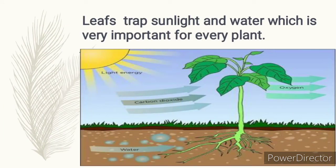Leaves trap sunlight and water, which is very important for every plant. Can you see the leaves trapping sunlight? Sunlight is very important for plants and animals. You can see in this picture that the leaf is trapping sunlight and water, which helps plants to grow.